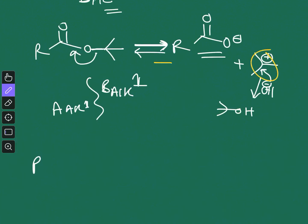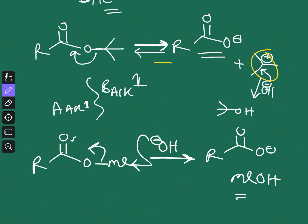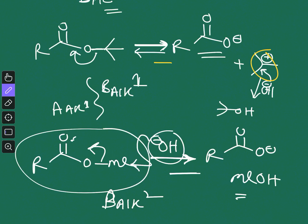The final mechanism is BAL2, applied to a methyl ester in basic medium. Hydroxide is a much better nucleophile than water, so no protonation is needed. OH⁻ directly performs an SN2 attack on the methyl carbon in a single irreversible step, giving the carboxylate and methanol simultaneously. Both OH⁻ and the ester are present in the rate-determining step, making it bimolecular. This is BAL2: base-catalyzed, alkyl oxygen cleavage, bimolecular.